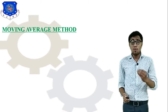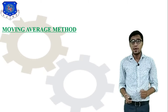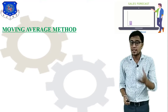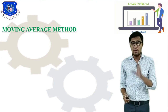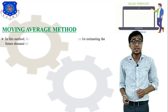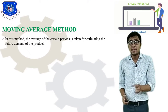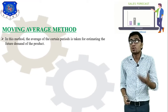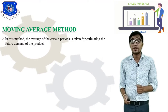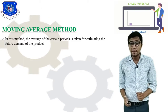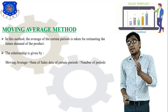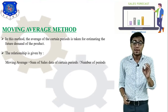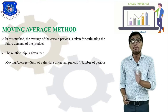First of all, what do you understand by moving average method? It is a type of sales forecasting method. It is a combination of the words 'moving' and 'average.' In this method, the average of a certain period is taken — for example, a two-month moving average or a three-month moving average — for estimating future demand.